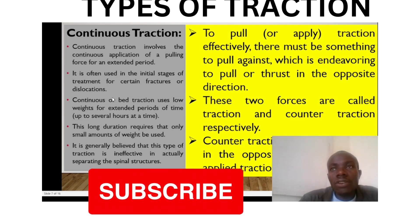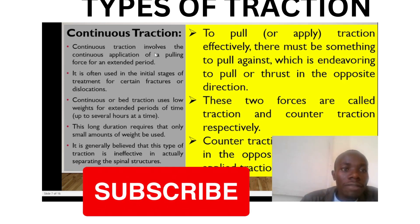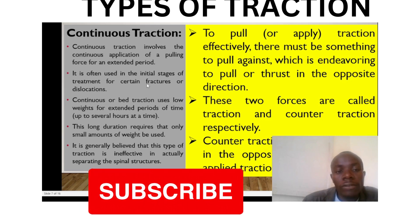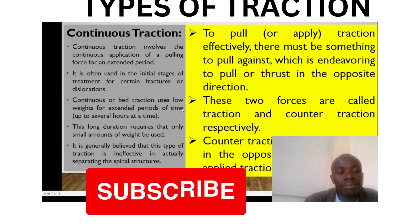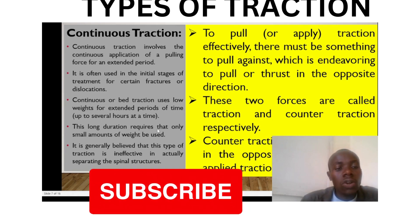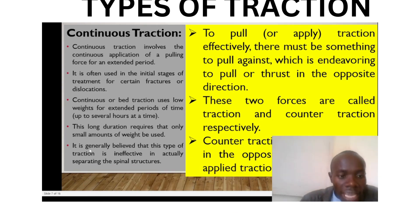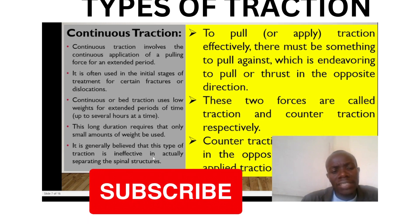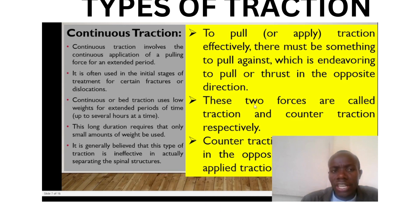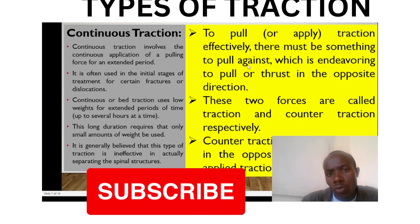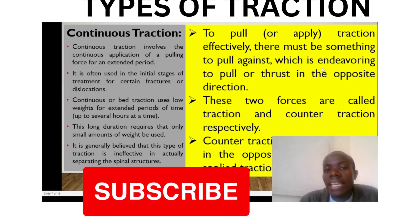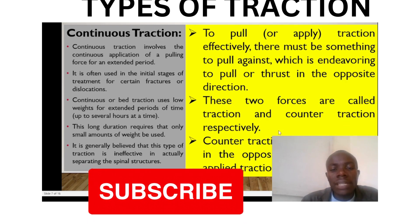Traction can be continuous or intermittent. Continuous traction involves the continuous application of a pulling force for an extended period, often used in the initial stages for treatment of certain fractures or dislocations. It is also called bed traction, using low weights for extended periods — up to several hours at a time. However, it is generally believed that this type of traction is ineffective in actually separating the spinal structures. For traction to be effective, there must be a counter-force — something to pull against — which pulls in the opposite direction. These two forces are called traction and counter-traction respectively.